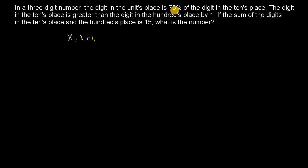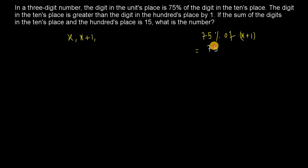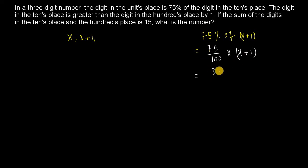The units digit is 75% of the tens digit. So units digit = 75% of (x + 1) = 3(x + 1) divided by 4.